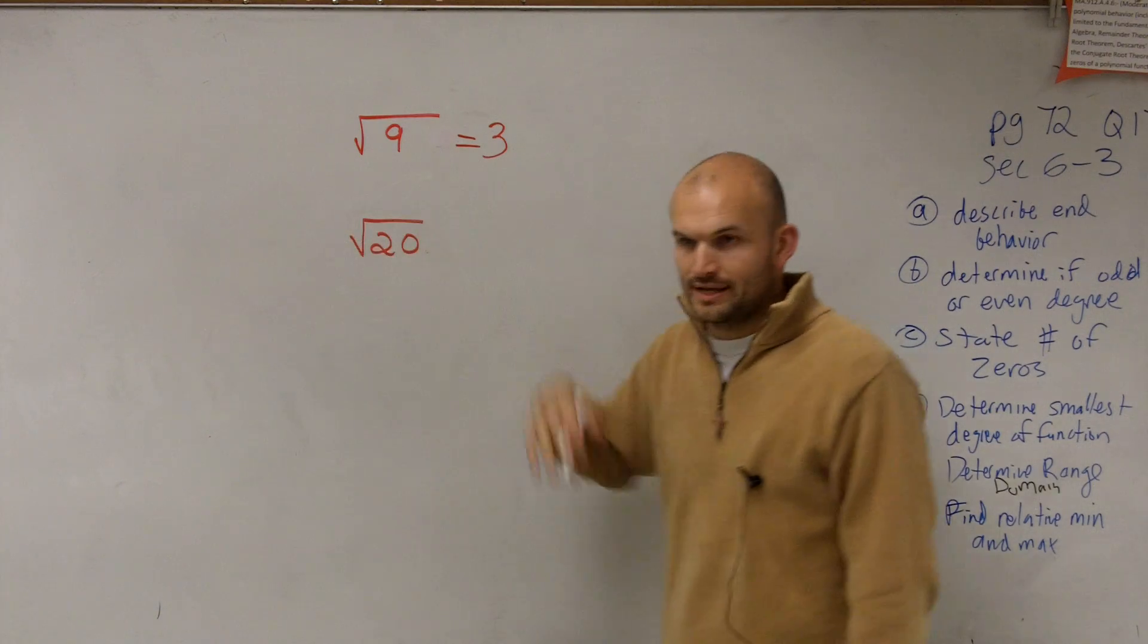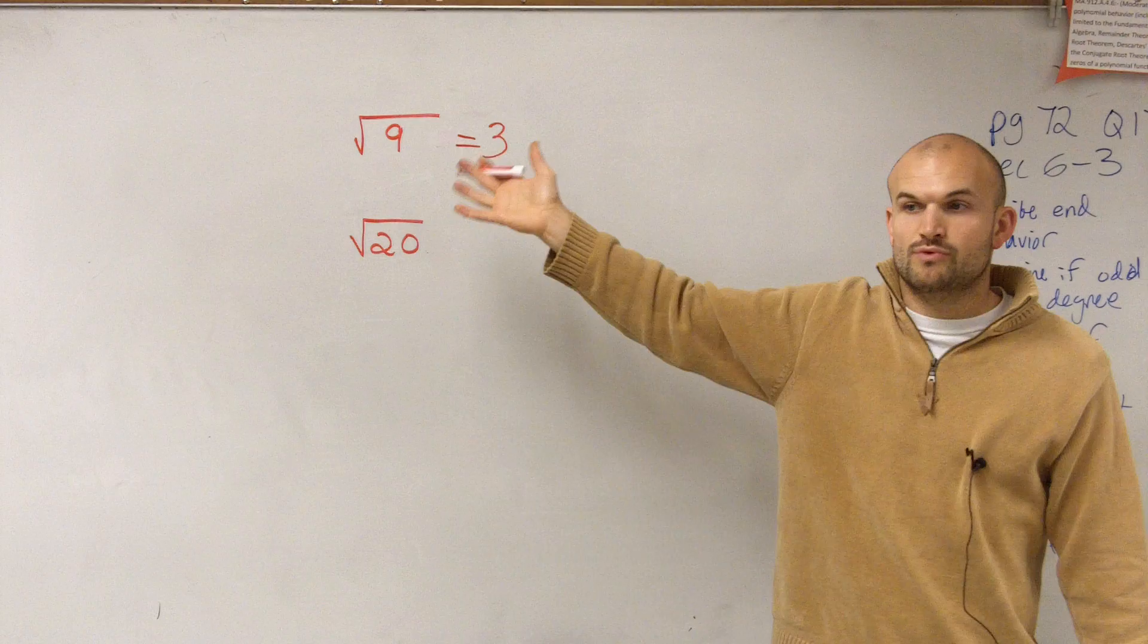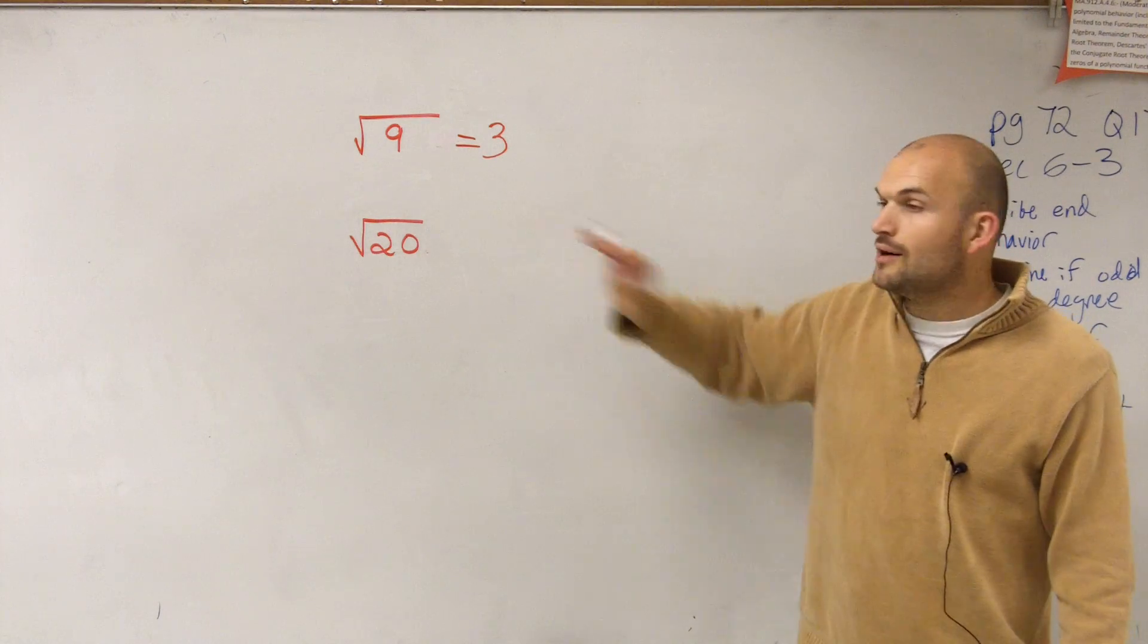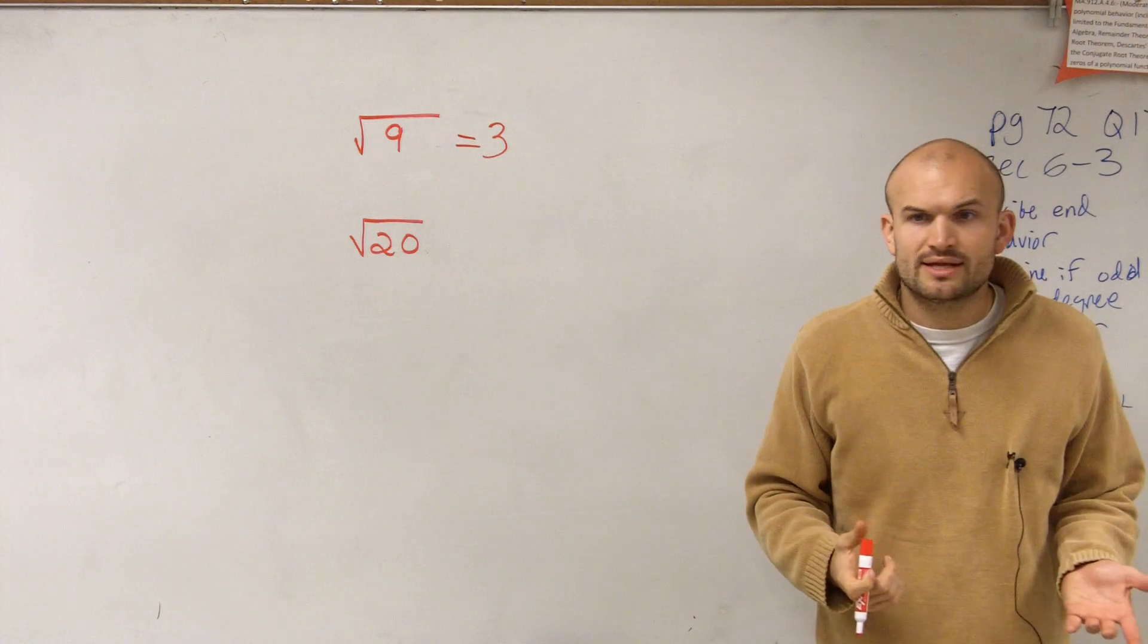Now we look at 20. These are all square numbers when you can figure out the square root and get an integer. But when I take a look at the square root of 20, there's not a number you can multiply by itself that's going to give you 20, is there?